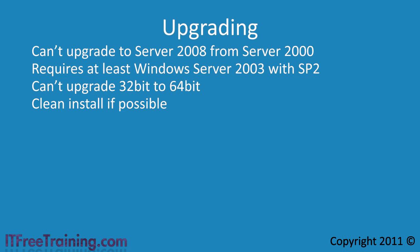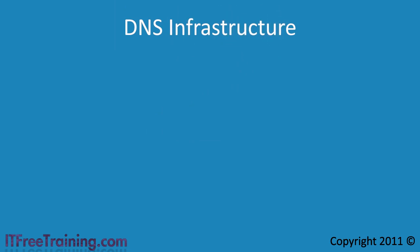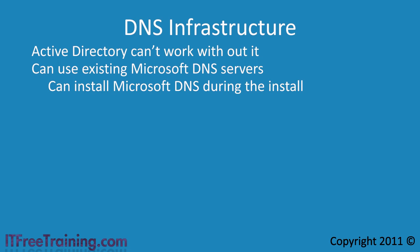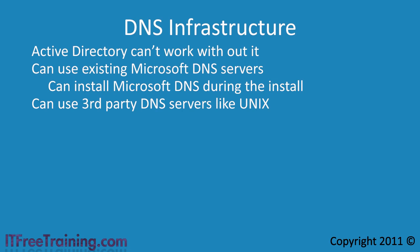Once you have your hardware and software ready, there is one last point to consider and that is DNS. DNS, or Domain Name System, is a system that allows computers to locate resources on the network. The reason it is important is that Active Directory cannot function without it. When you deploy Active Directory, you can use an existing Microsoft DNS infrastructure or install Microsoft DNS with the Active Directory install. If you are using another DNS solution, for example Unix DNS, this can also be used. The important thing is that you need DNS on the network for Active Directory to operate.